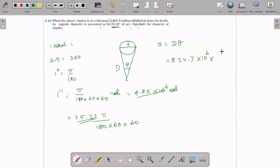35.72 into 4.85 into 10 to the power minus 6. The data will be in kilometers.